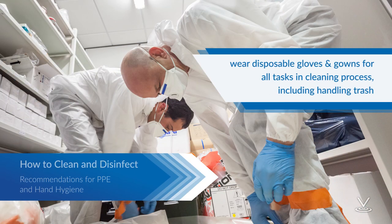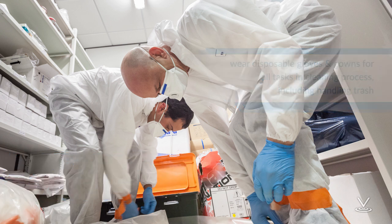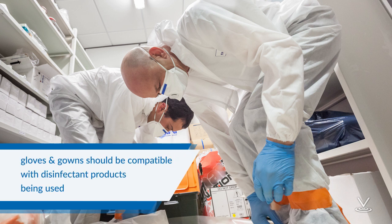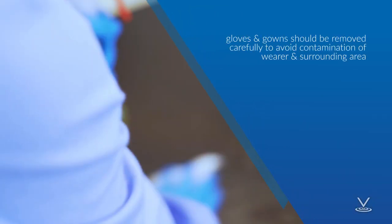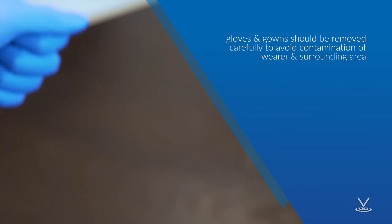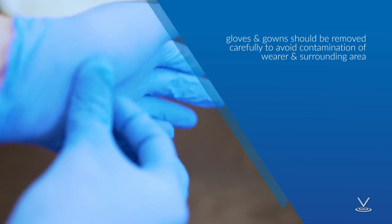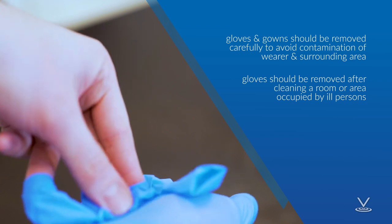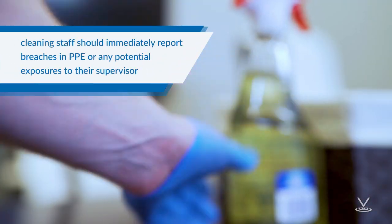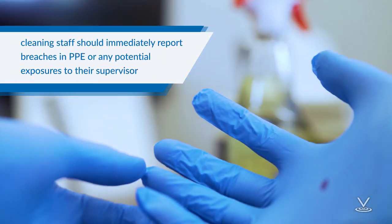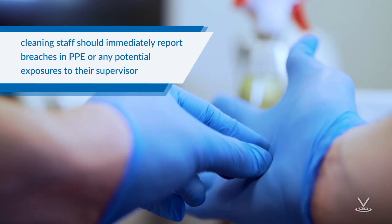Cleaning staff should wear disposable gloves and gowns for all tasks in the cleaning process, including handling trash. Gloves and gowns should be compatible with the disinfectant products being used. Additional PPE might be required based on the cleaning and disinfectant products being used and whether there is a risk of splash. Gloves and gowns should be removed carefully to avoid contamination of the wearer and the surrounding area. Gloves should be removed after cleaning a room or area occupied by ill persons. Cleaning staff should immediately report breaches in PPE, such as tears in gloves, or any potential exposures to their supervisor.